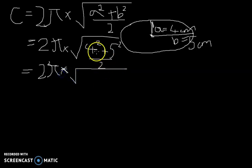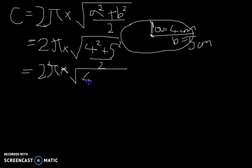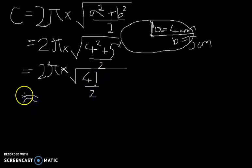Now we get 2π multiplied by the square root of 16 plus 25, which you can do in your head — that's 41. So we have the square root of 41 over 2. Now I'm just going to use the approximation sign because you have to indicate in mathematics when you are approximating an answer, just to let the person marking you know that this is an actual approximation. So we get 2π multiplied by the square root of 20.5.